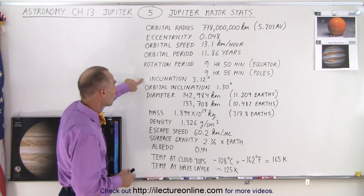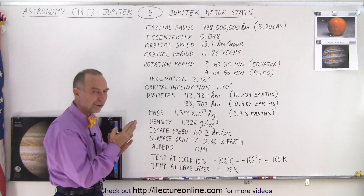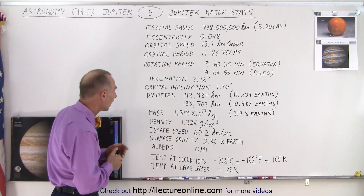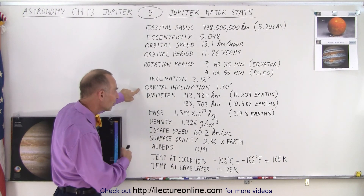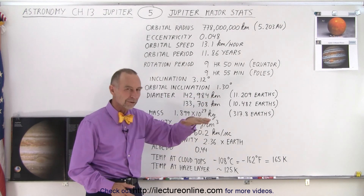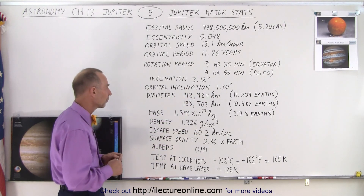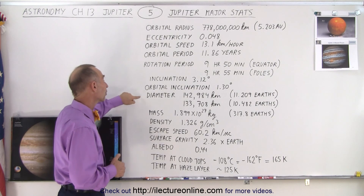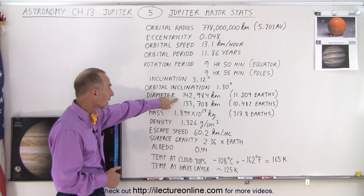The inclination of the planet is 3.12 degrees, so it has a very slight tilt. And the orbital inclination relative to the ecliptic is just over one degree, so it's very, very close — the orbit of Jupiter is very close to the ecliptic.